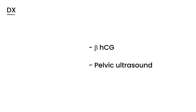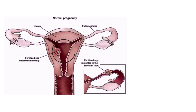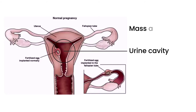The beta-hCG is initially done with urine, and if it's positive, the test may be repeated with the patient's blood. The pelvic ultrasound will show you what is going on — if it is indeed an ectopic pregnancy, there will be nothing in the uterine cavity, but it will most likely show a mass in the adnexa area, as shown in this diagram.